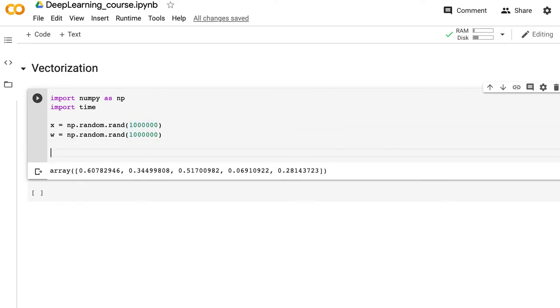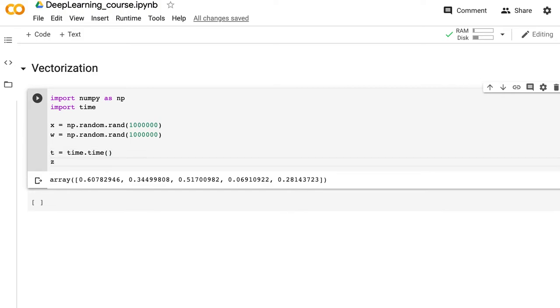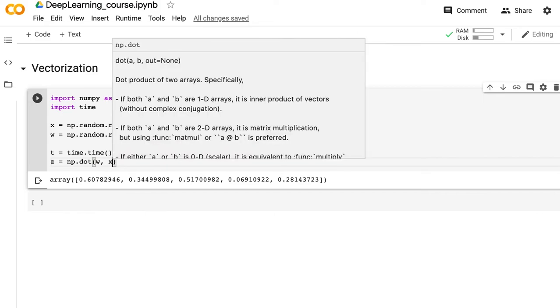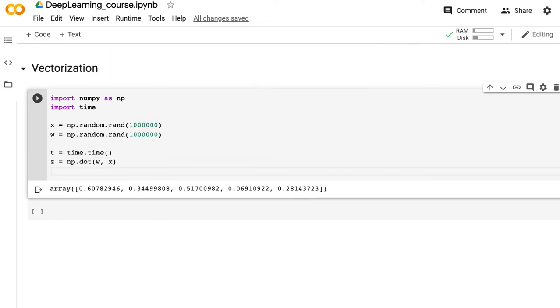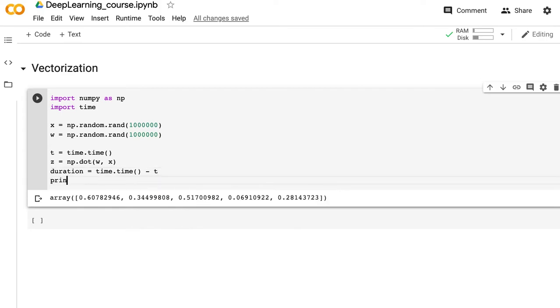Let's use the vectorized version first. We record the start time using time.time(), then calculate z using np.dot with the two vectors (ignoring b for now). After the calculation, we compute the duration as the current time minus the starting time, and print the value of z and the duration in milliseconds.